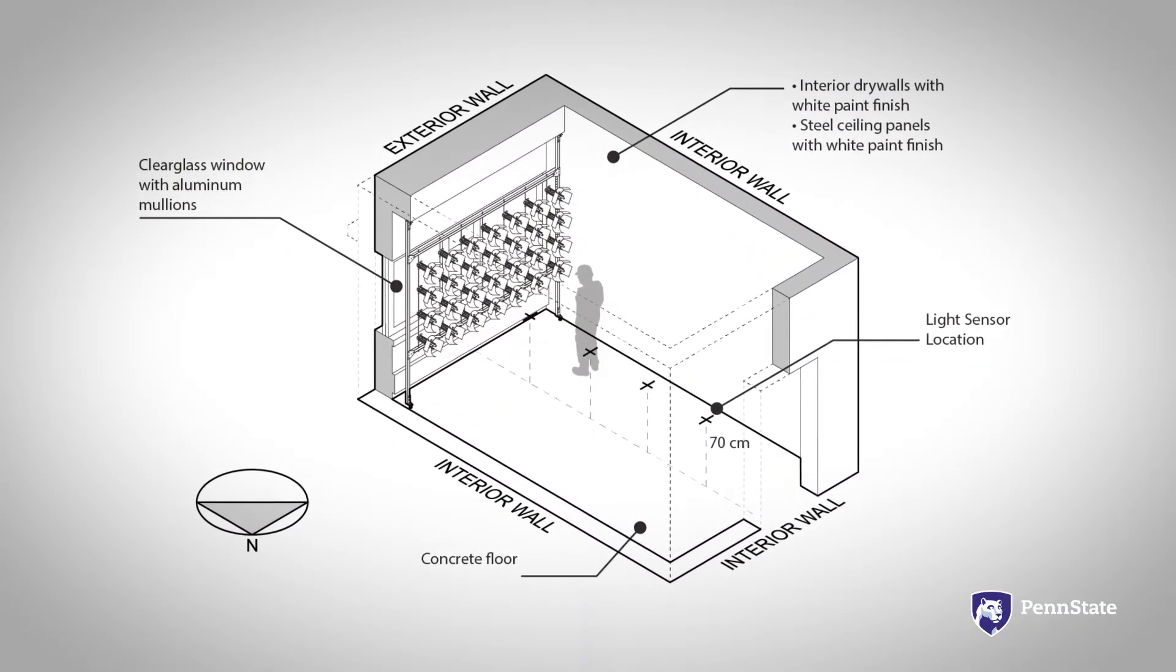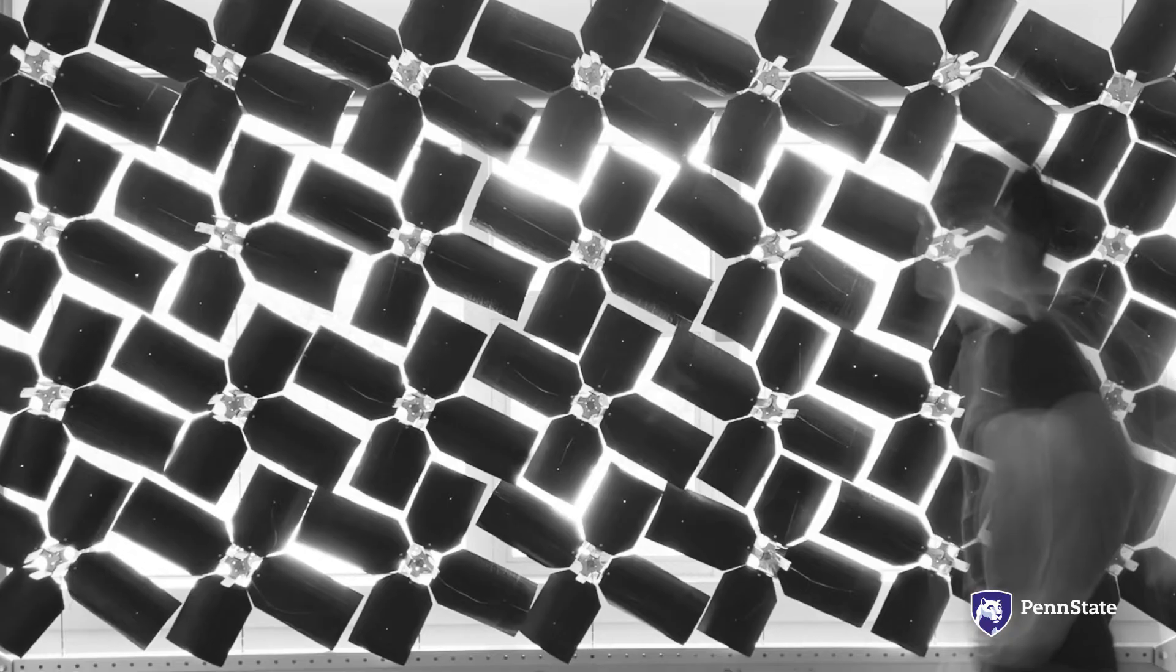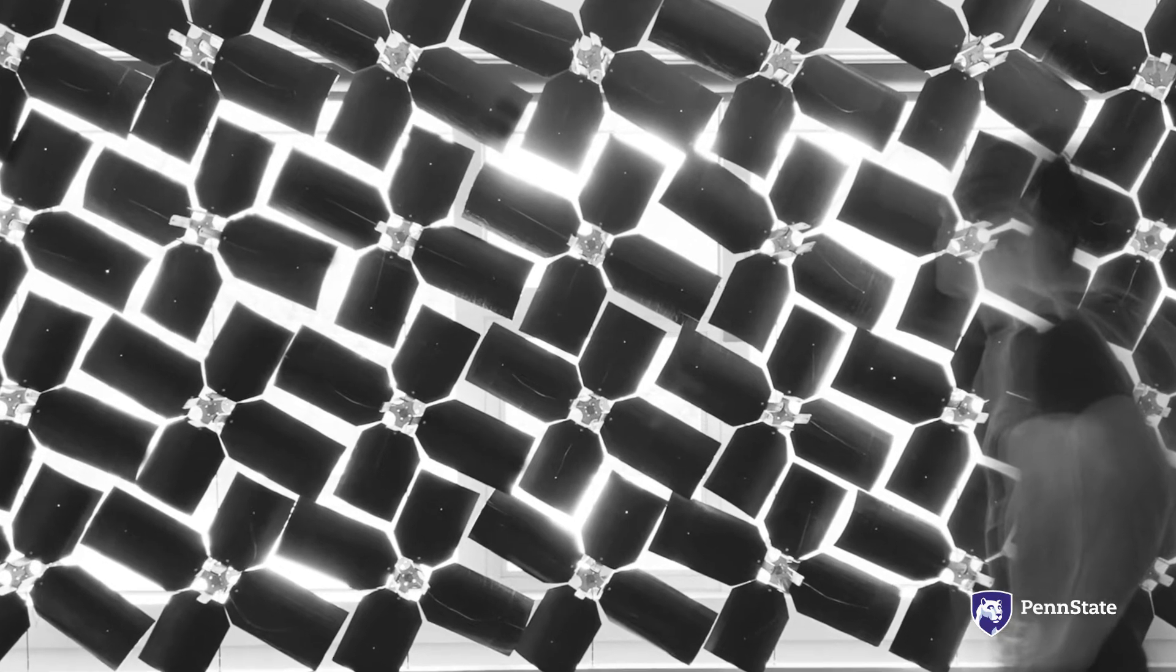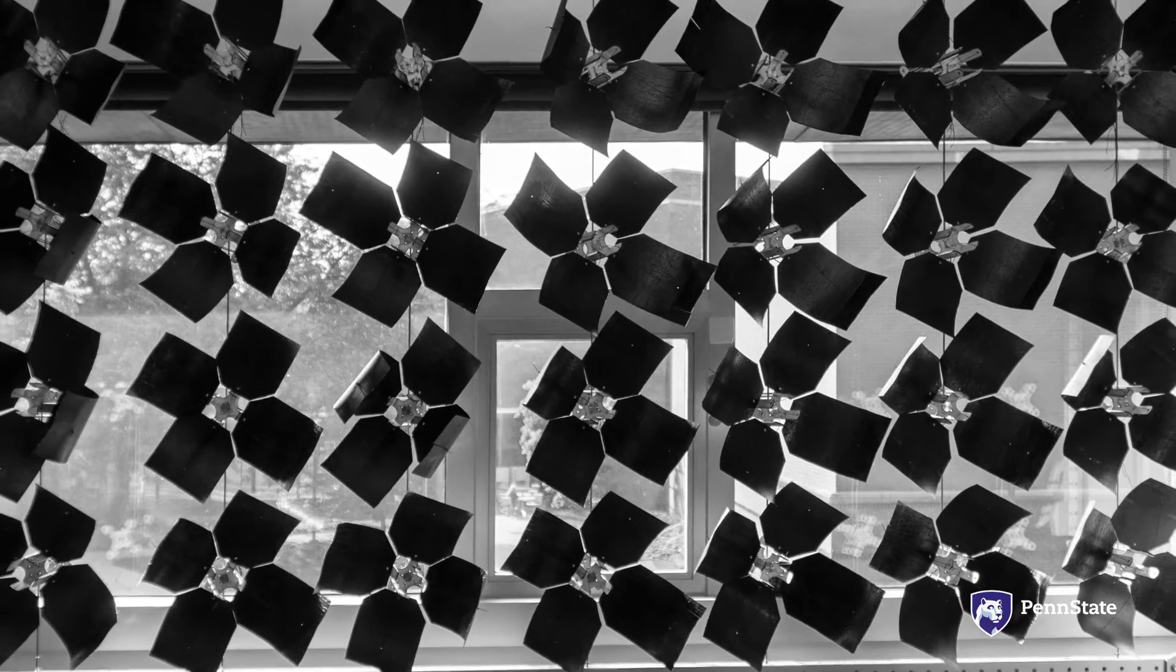After fabricating the screen, its daylight performance was tested using light sensors placed in a test room with a shading screen. The sensors were used to measure daylight levels in the room with the screen and without the screen throughout the day.